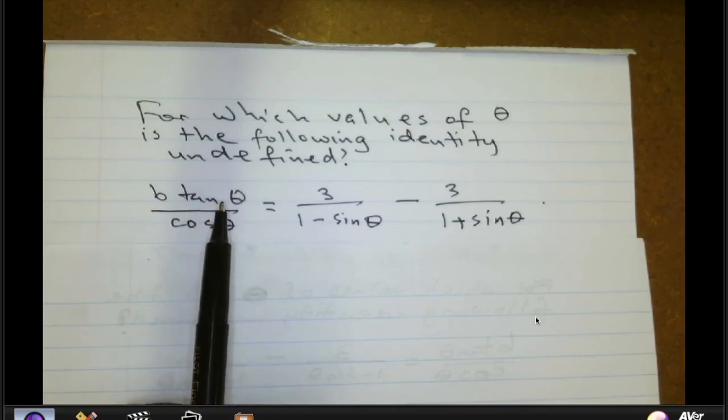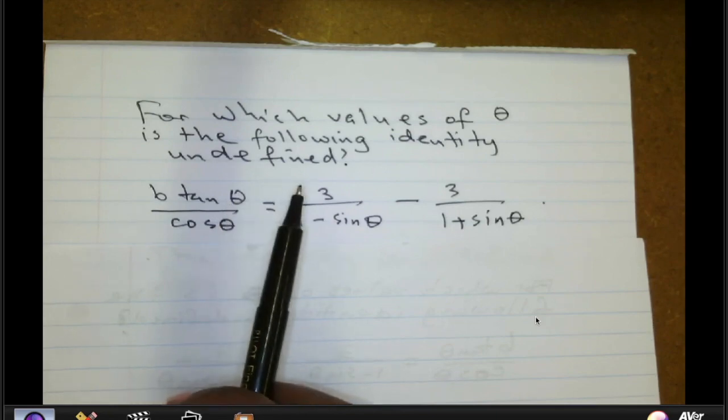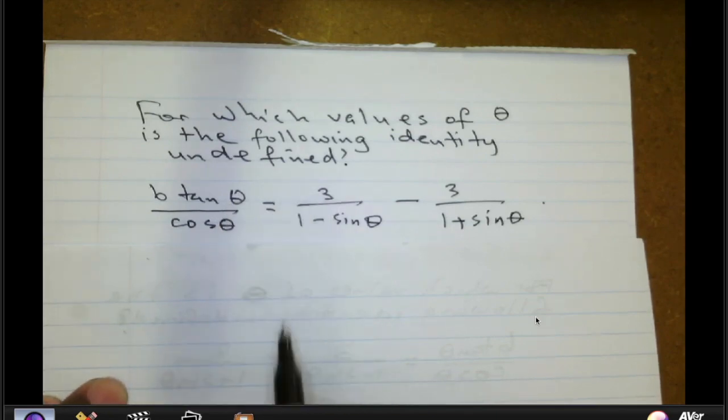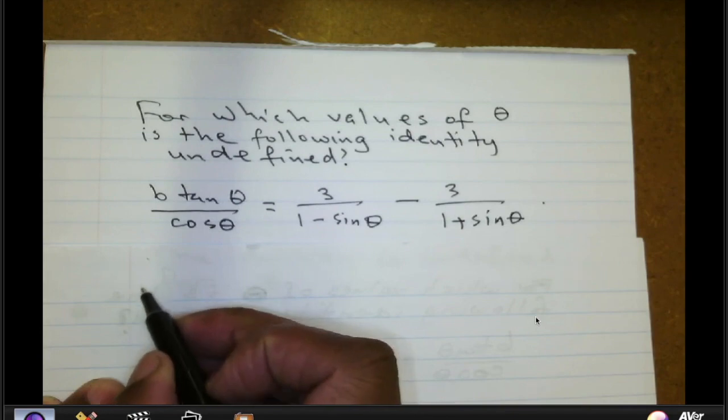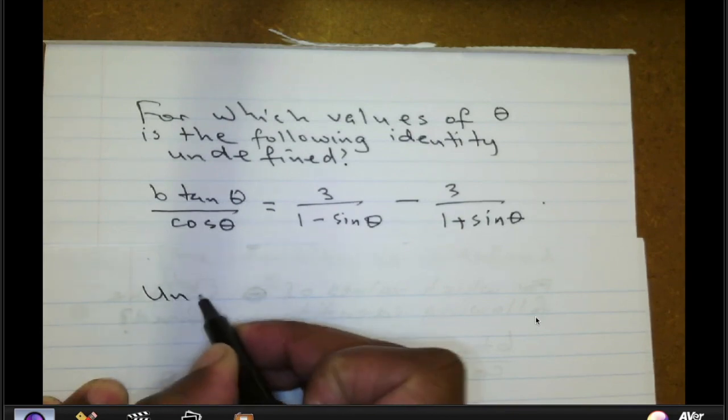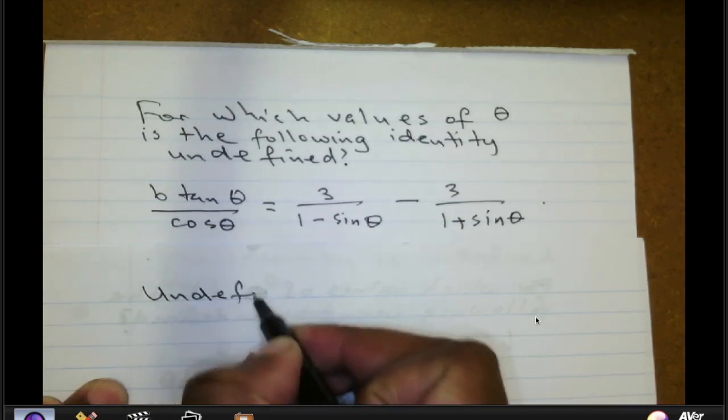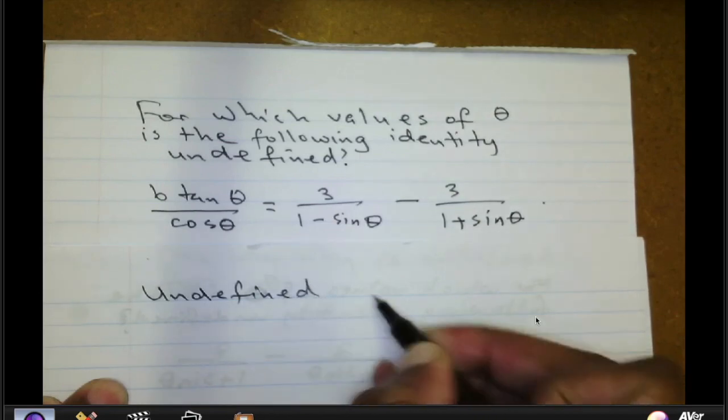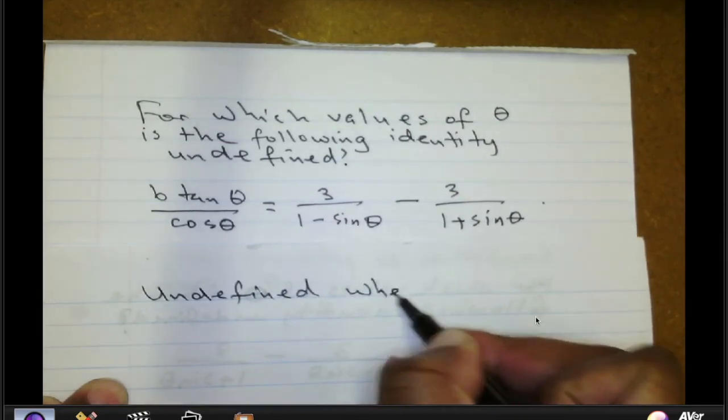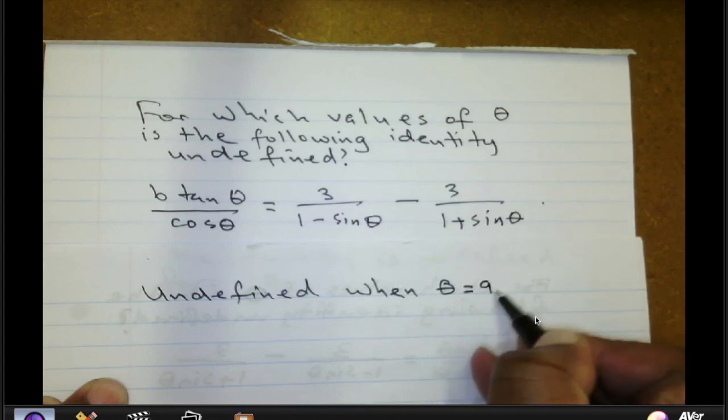There are asymptotes there for the graph of tan. So if you see tan in your identity, then remember the identity is undefined when theta is equal to 90 degrees.